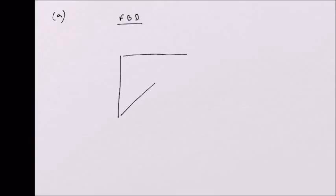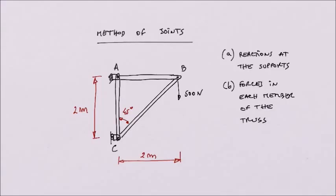I am going to draw again our truss. We have joint A, joint B, joint C. We need to represent all the external loading, so this 500 N needs to be included at joint B. At support A, it is double fixed.